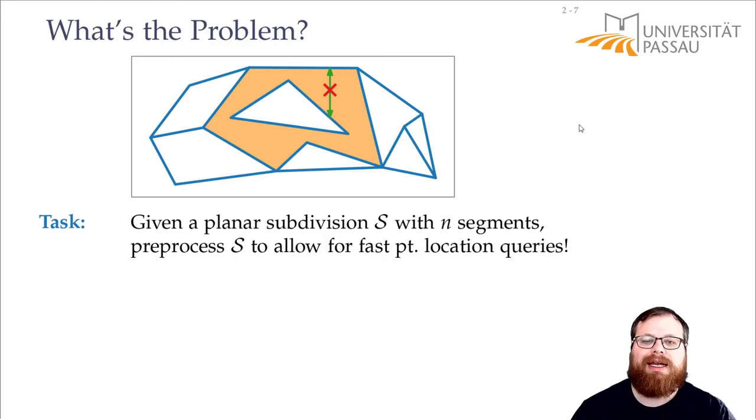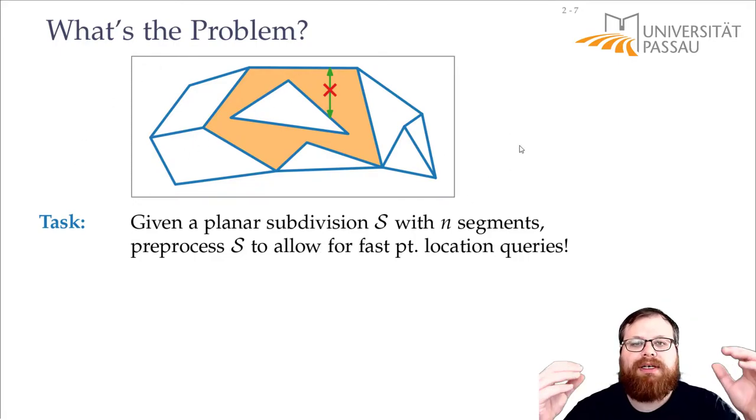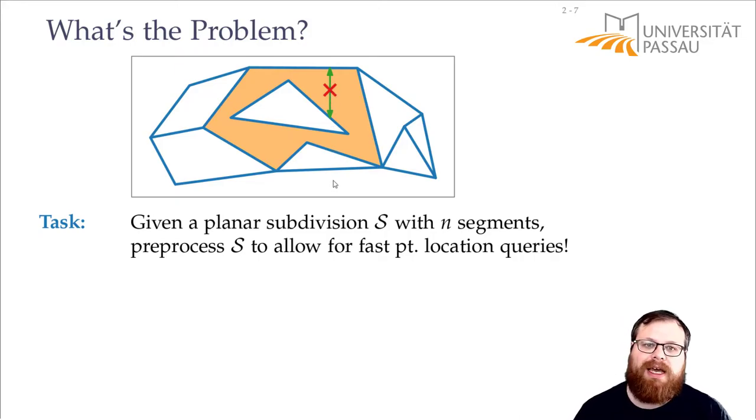But the question is again how do you answer this? So how would you pre-process this? We only have the segments. We don't have any order of them. They are not sorted in any way. And we can do this check. We can walk downwards but that means we have to compare with every segment of the input. So we need order of n time to figure out what is the first segment that I hit if I walk downwards. And the same for going upwards. In order of n query time that's very long, we would like to do it much faster.